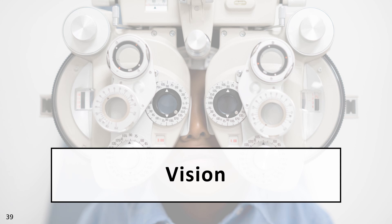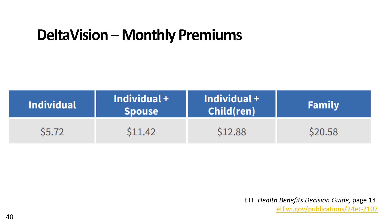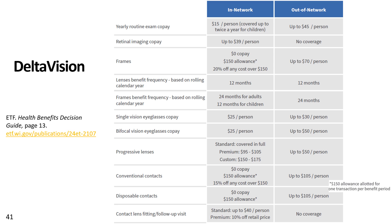We also have vision insurance through Delta Vision. Like dental, you choose who you want to cover — for example, if you and your spouse wear contacts or glasses, you can enroll just the two of you instead of the whole family. You can enroll as a new hire or enroll or drop coverage at open enrollment. If you have vision expenses coming up, you can pick coverage for the next year and drop it at the next open enrollment after receiving the service. The table shows coverage and copays for Delta Vision benefits.